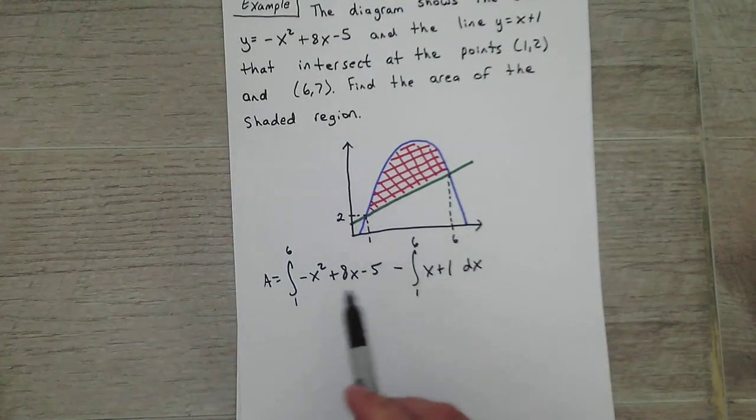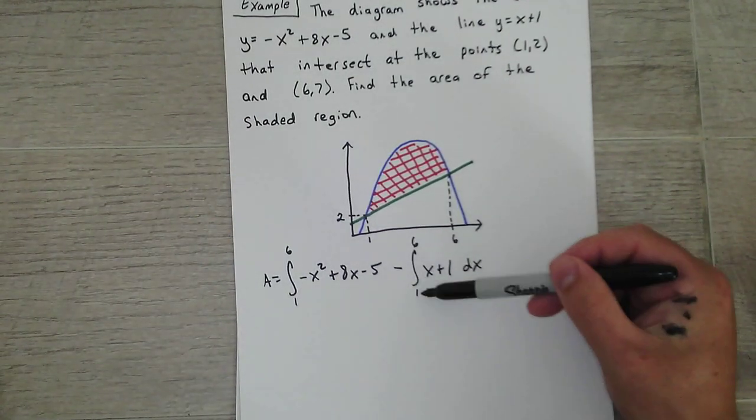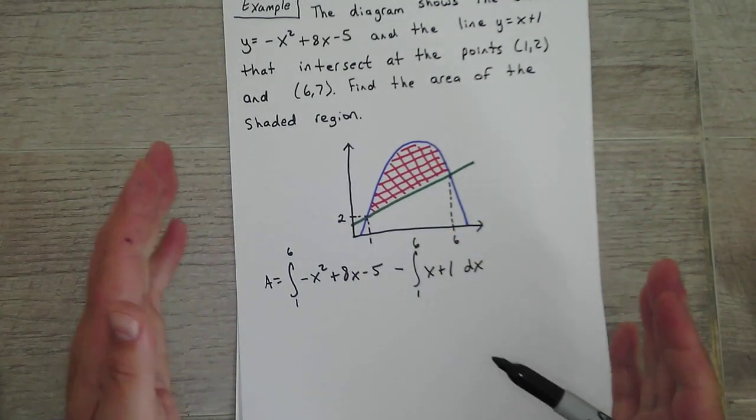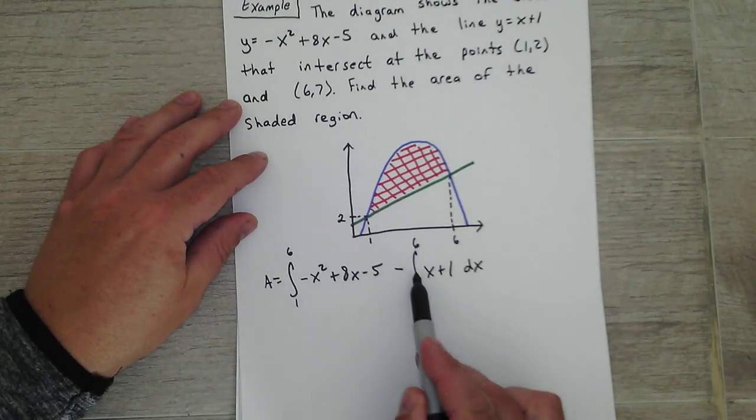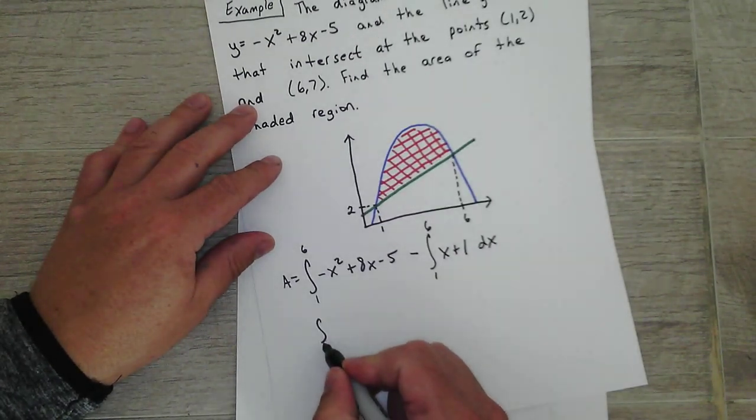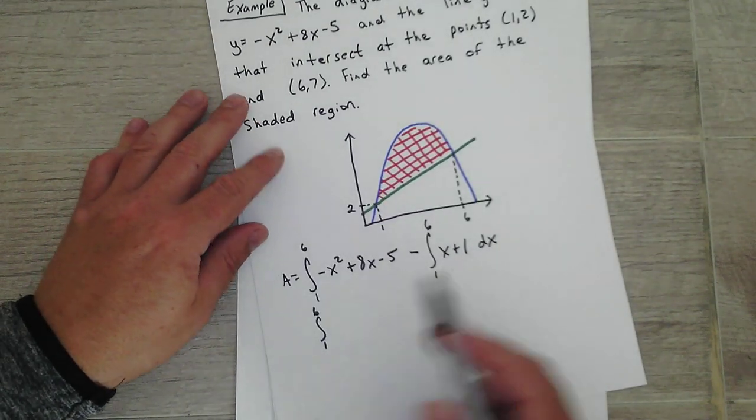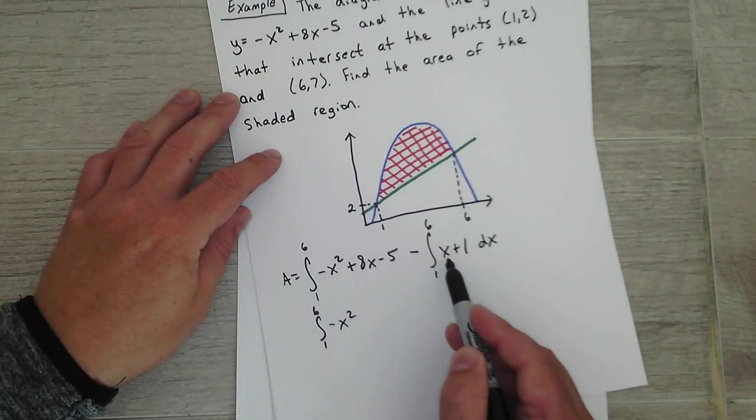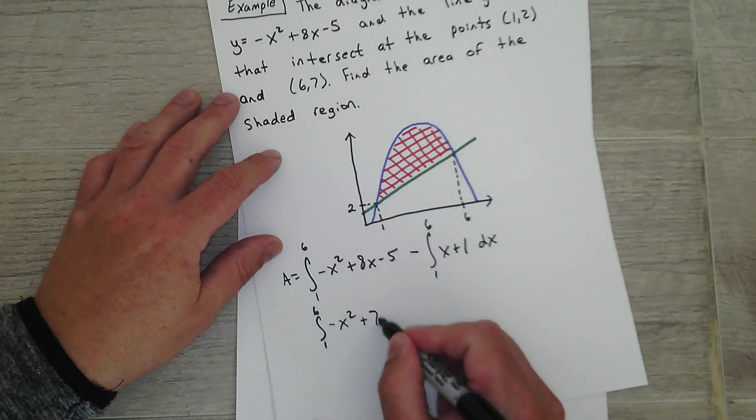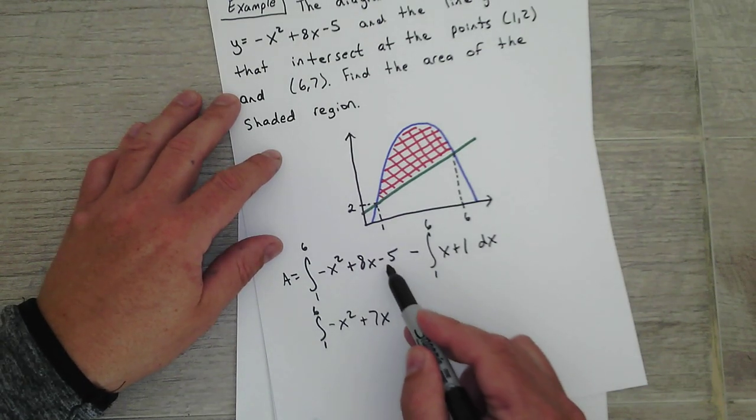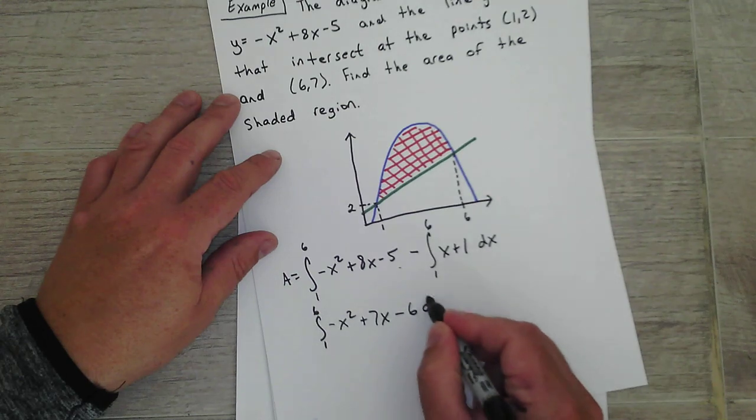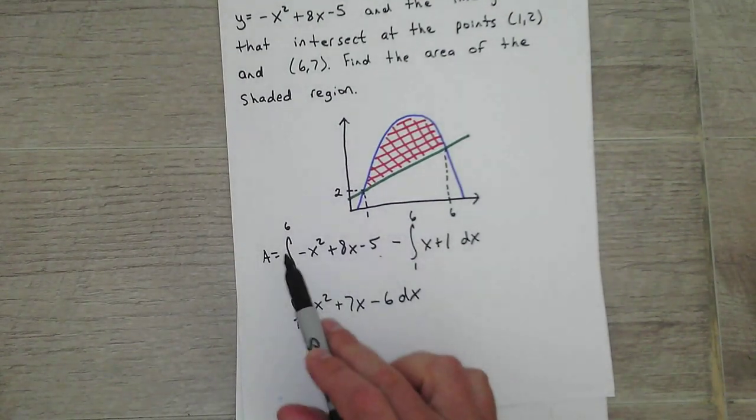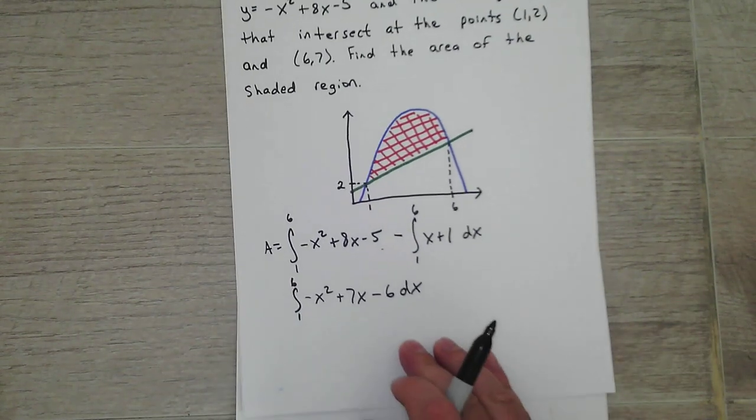Okay, so when you have two integrations like this you set them up separately. As long as the limits of integration are the same, then you can basically simplify this by moving this out front. Okay, then you simplify it. I have negative x squared, so I have 8x minus x, that gives me 7x. I have negative 5 minus 1, gives me negative 6. And you can do that. As long as the limits of integration are the same, you can just combine it into 1 and then simplify the expression.